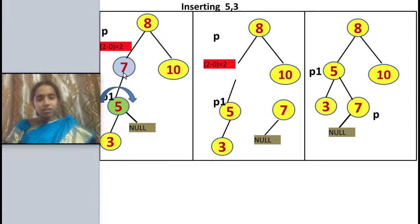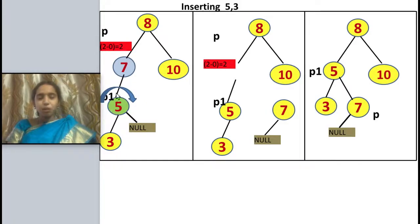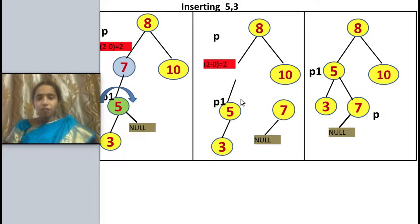Now I am getting the left-left insertion condition again. Calculating balance factors: 0 for node 3, plus 1 for node 5, and 2 minus 0 which is plus 2 for node 7 — an unbalanced condition. Node 7 is named P and node 5 is P1. I perform a right rotation between P and P1. Since P1's right child is null, I can directly make 7 the right child of 5.